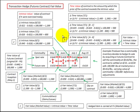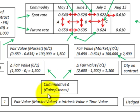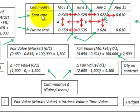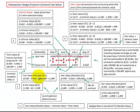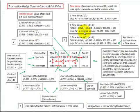What we're going to be looking at here is how we'd calculate the fair value or the market value, the intrinsic value, and the time value of a derivative. We'll be doing it in terms of a futures contract that's being used here as a hedge against the sale of inventory. This example is going to be based on the equation where the fair value of the derivative equals its intrinsic value plus its time value, and we're looking at changes in the spot rate and the future rate of the derivative.